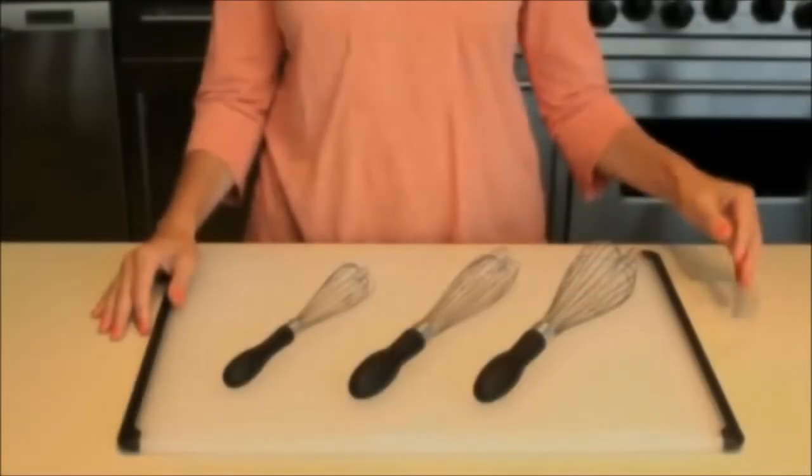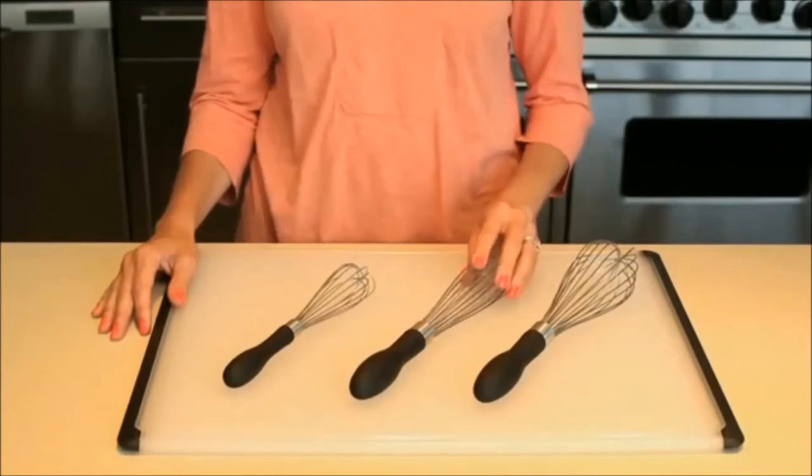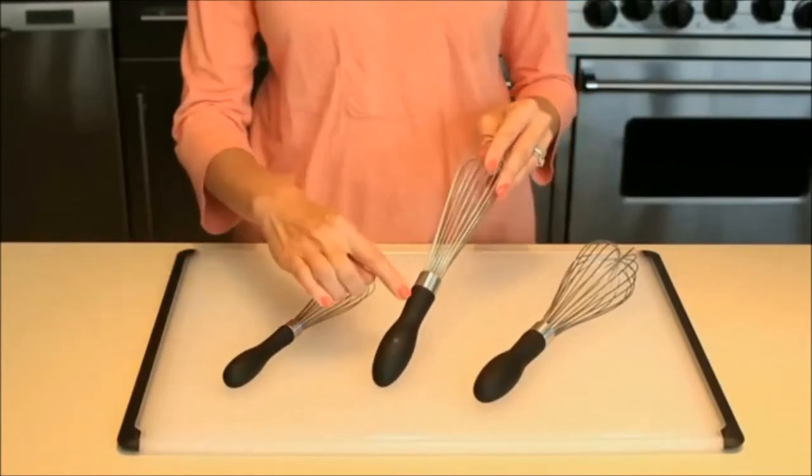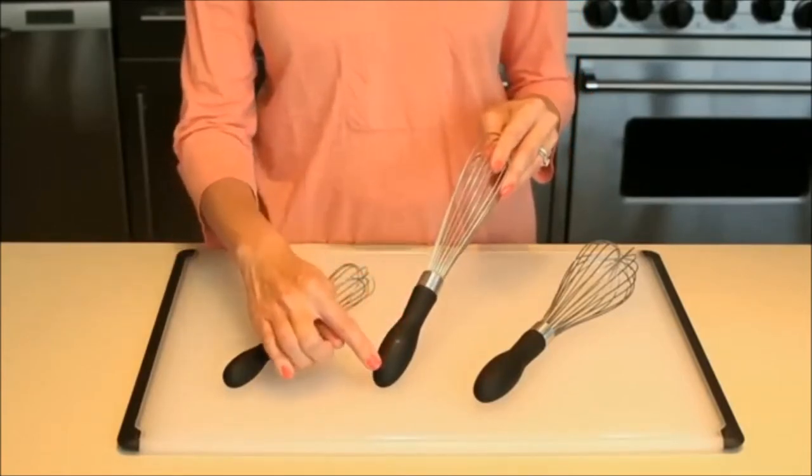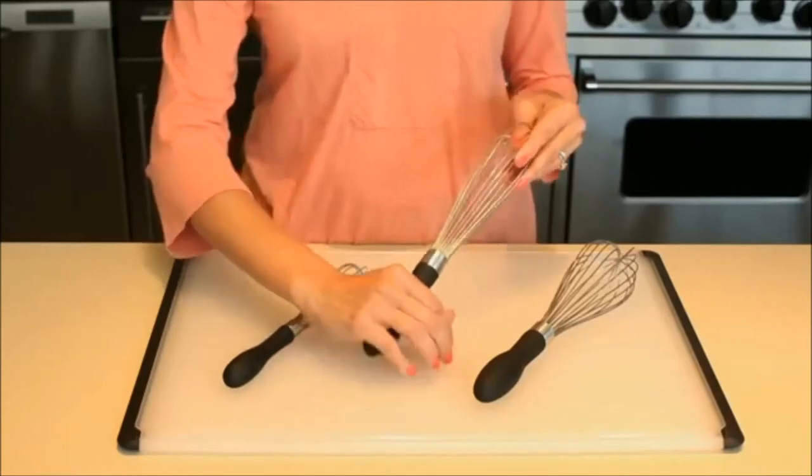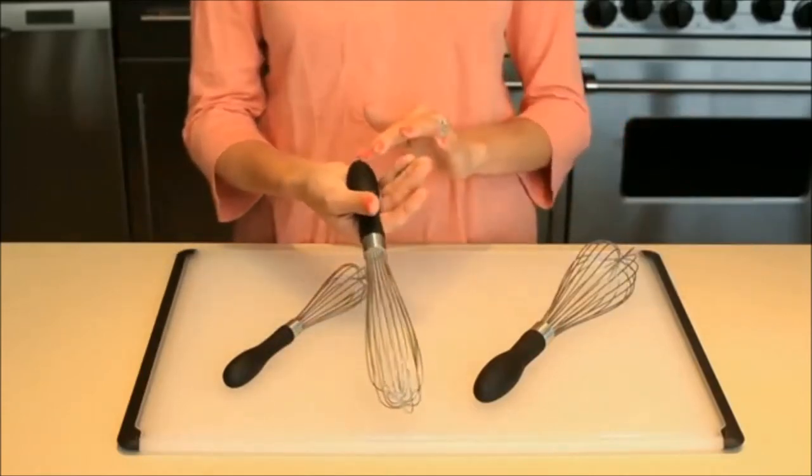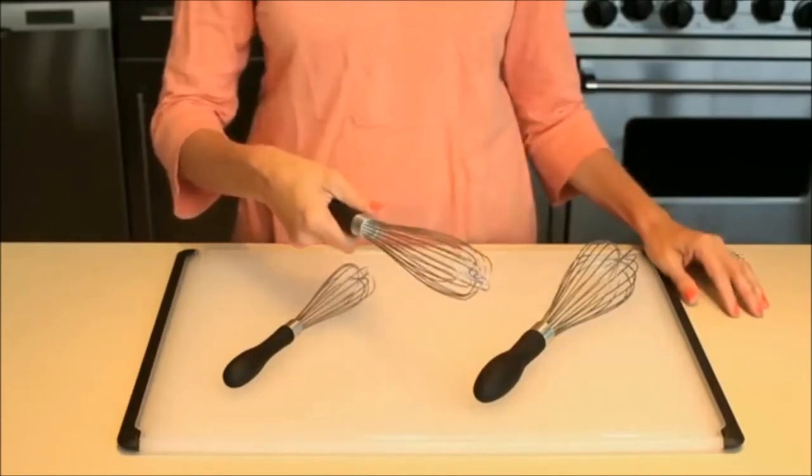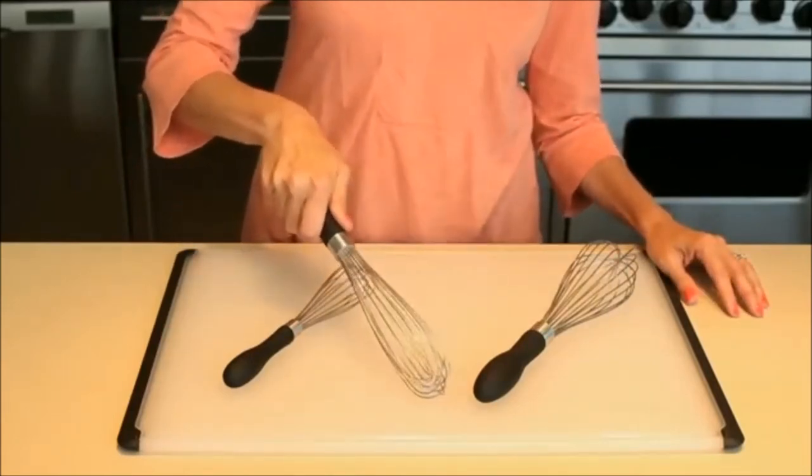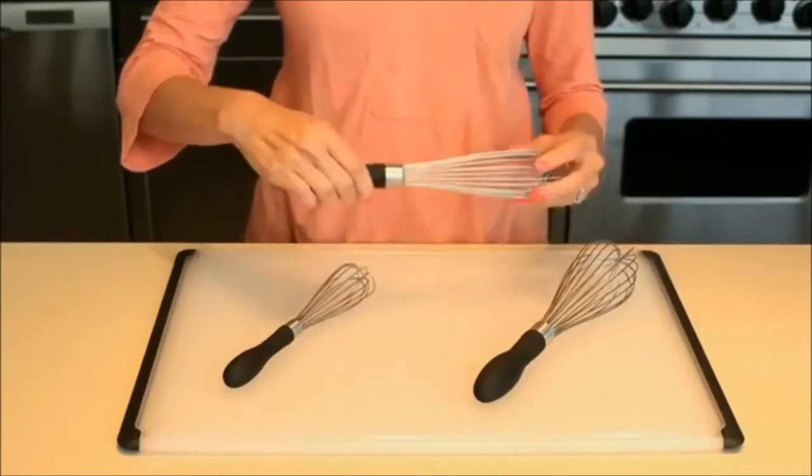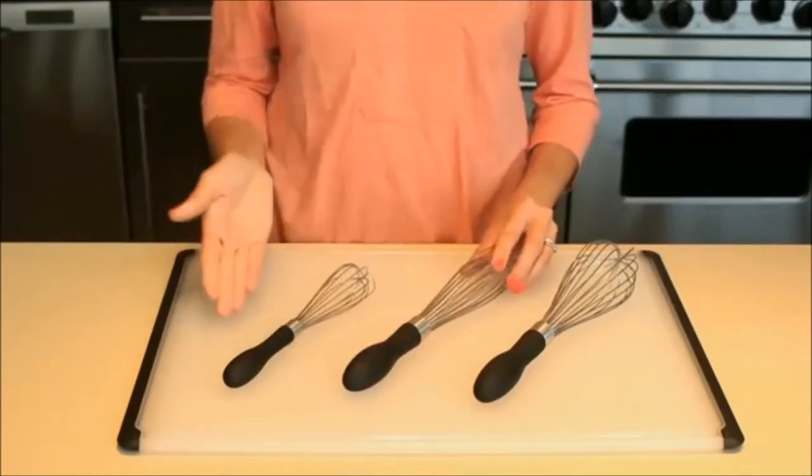First up, OXO Good Grips Whisk is the best whisk for most people for its lighter weight and versatility. These OXO whisks feature comfortable soft rubbery handles that will not slip even if your hands are wet or oily. The handle is bulb-shaped that is easy to grab on. The stainless steel wires flex while you whisk. These OXO whisks are available in three sizes.